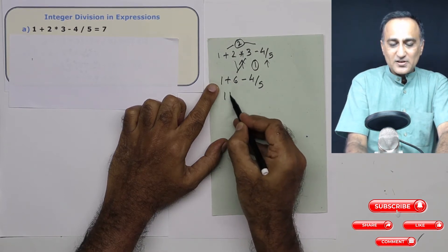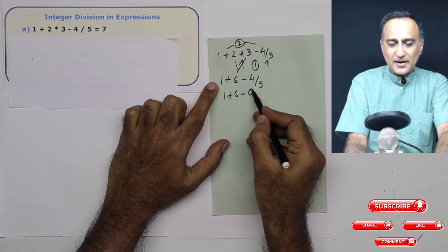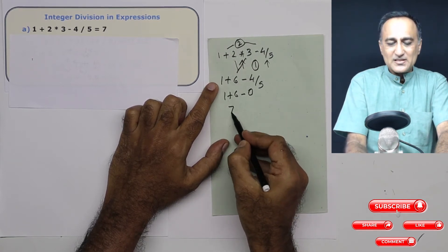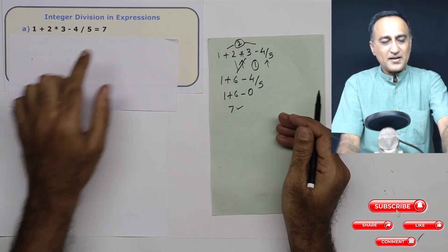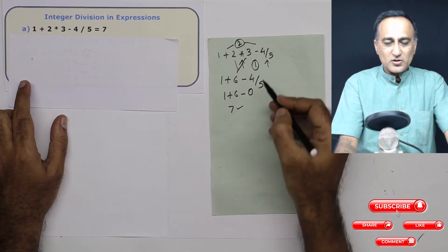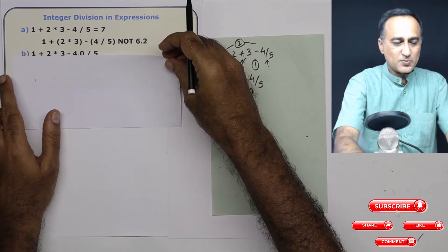So the result of this is going to be 1 plus 6 minus 0. Then it is easy, 1 plus 6 is 7. That's why you ended up getting the value 7. So this is how integer division works in an expression.